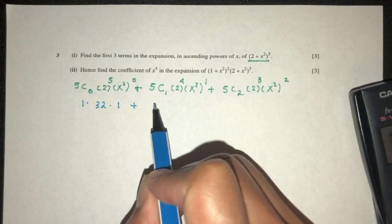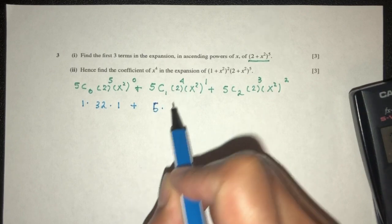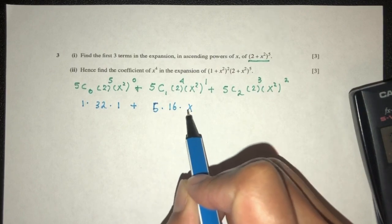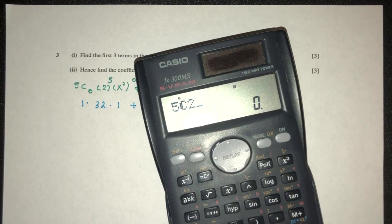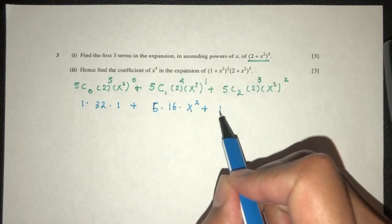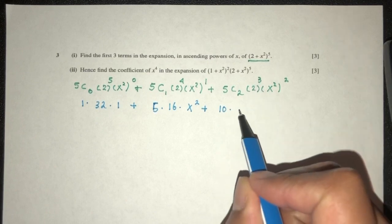And then here we have 5 choose 1 is 5. Here we have 16, and that will be x squared. And here we have 5 choose 2, should be 10. Let's check. It is 10 indeed. And 2 power 3 should be 8, and that will be x power 4.